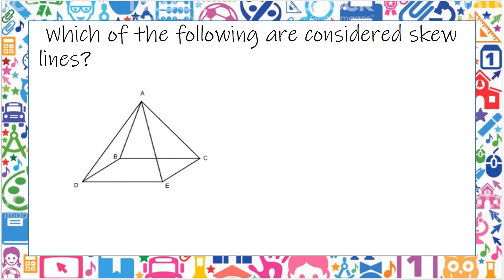Which of the following are considered skew lines? Skew lines are any lines that are not parallel or perpendicular to the others. Every edge — AE, AC, AB, and AD — are all skew lines.